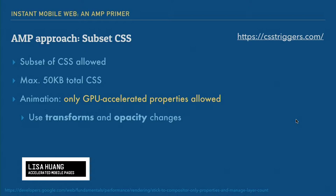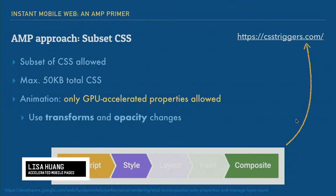So what's AMP's approach to complex CSS animations and anything else that will drain power on your users' low-end phones? They use a very limited subset of CSS — in fact, they only allow 50 KB of CSS, which is not a lot once you're used to using Sass and other big frameworks. With animation, only GPU-accelerated properties are permitted. For example, you can use transform, like we saw in the case study, as well as opacity changes. The goal is to skip layout and painting. You can go to CSS Triggers to identify which CSS functions qualify.